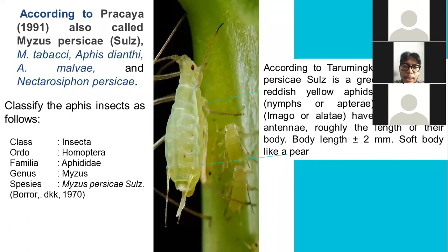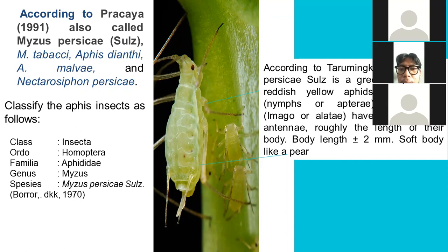Classification of the aphid insect: Class Insecta, Order Homoptera, Family Aphididae, Genus Myzus, Species Myzus persicae. According to Taru Mengkeng 2001, Myzus persicae is a greenish-yellow or reddish-yellow aphid. Young nymphs are small, and adults have relatively long antennae, roughly the length of their body. Body length is approximately two millimeters, with a soft body appearance.